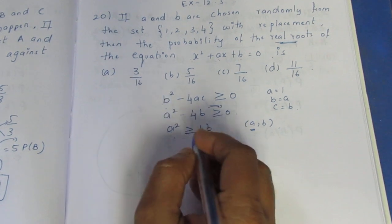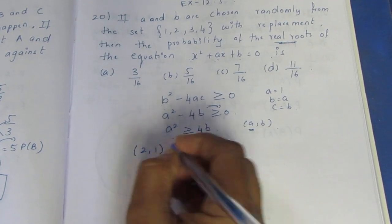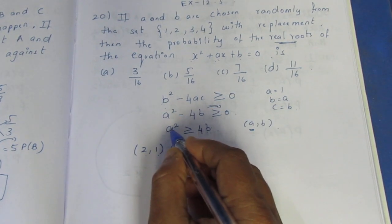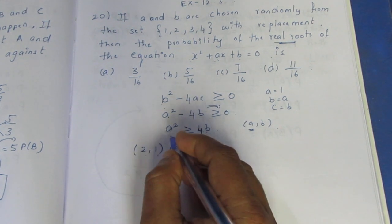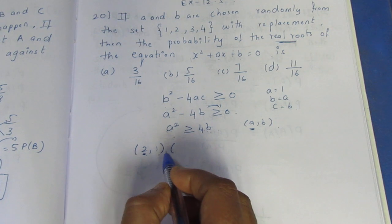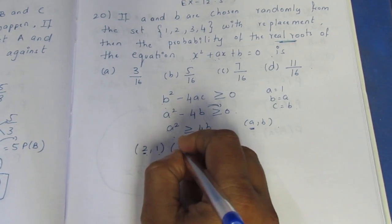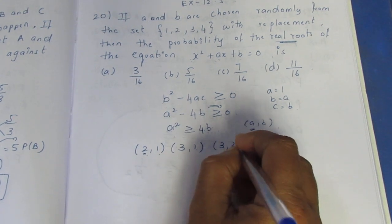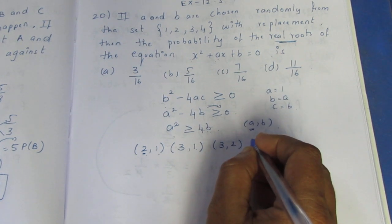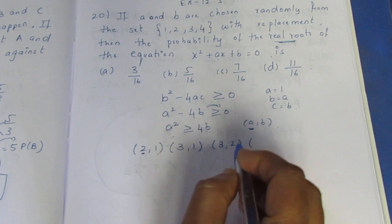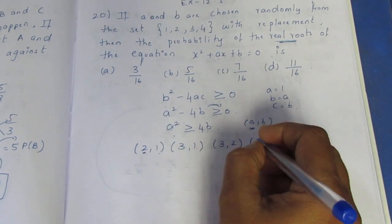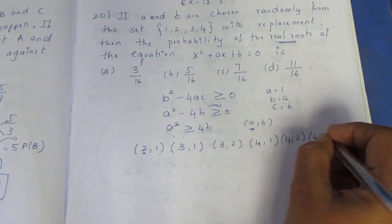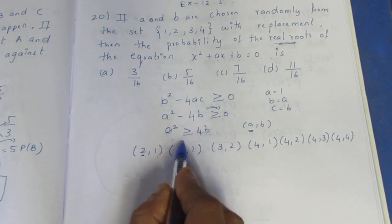Starting with pairs: (2,1), (2,4), (2,2), (2,3), (2,4), (3,1), (3,2), (3,3), (3,9) — checking b squared minus 4ac for each. Continuing: (4,1), (4,2), (4,3), (4,4) — these are the favorable outcomes where b squared minus 4ac is greater than or equal to zero.